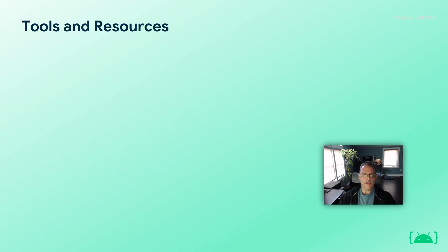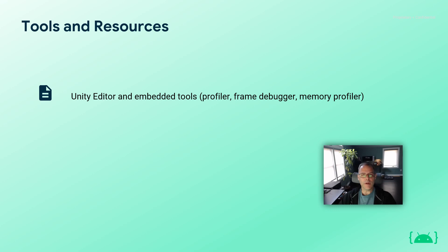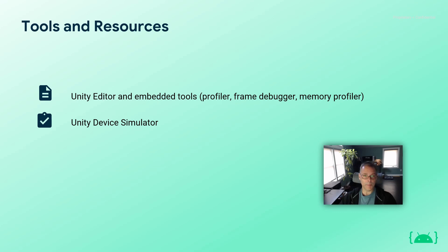There are some excellent tools that help you in your development efforts. Directly from the Unity editor, there are a number of embedded tools — the profiler, the frame debugger, and the memory profiler — that allow you to get a good snapshot of actual performance without guessing where your bottlenecks occur. There's also the Unity device simulator, which allows you to run in-editor various device orientations and configurations to get a better sense of how your UI and camera layout will appear before you actually build and deploy to a target device.